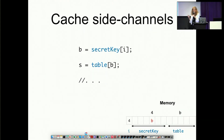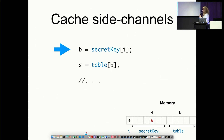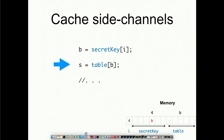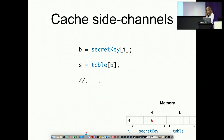There are two very simple lines of code. These simple lines of code might appear in cryptographic code — it's very common. On the bottom of the slide you can see a memory layout containing a secret key part and a table part, which are two arrays in memory. The code is really very simple: on the first line it accesses the secret key, and then that value is used to access the second array, the table array. And even though it is not obvious from these two lines, just accessing the memory this way leaks the secret key to the attacker. This is due to cache attacks.